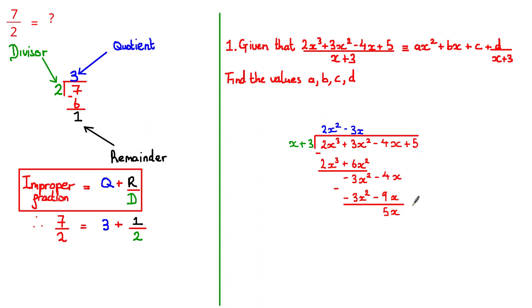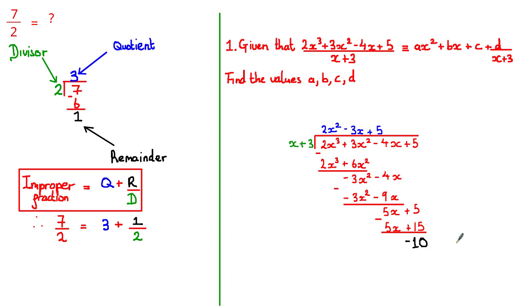Bringing the next term down, we need a number that multiplies with x to give 5x — that number is positive 5. Multiplying 5 across: 5 times x = 5x, and 5 times 3 = 15. Subtracting: 5x − 5x = 0, and 5 − 15 = −10. Since x cannot divide into −10, we cannot continue. Our remainder is −10, our quotient is 2x² − 3x + 5, and our divisor is x + 3.